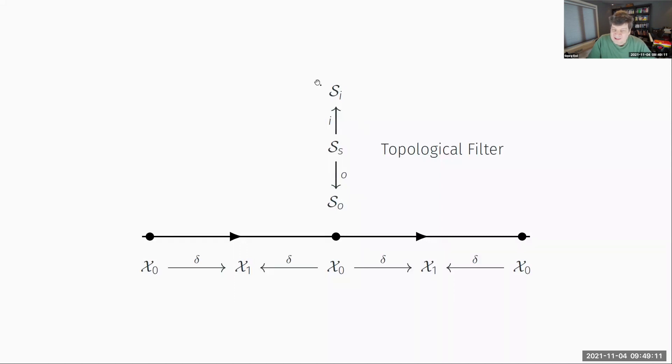So now this is just the data. We need to actually repeat the construction that we've done for the sheaf before in that we need to have data over all our simplices and provide sheaf maps between the data. Now we have a full sheaf construction for a topological filter.